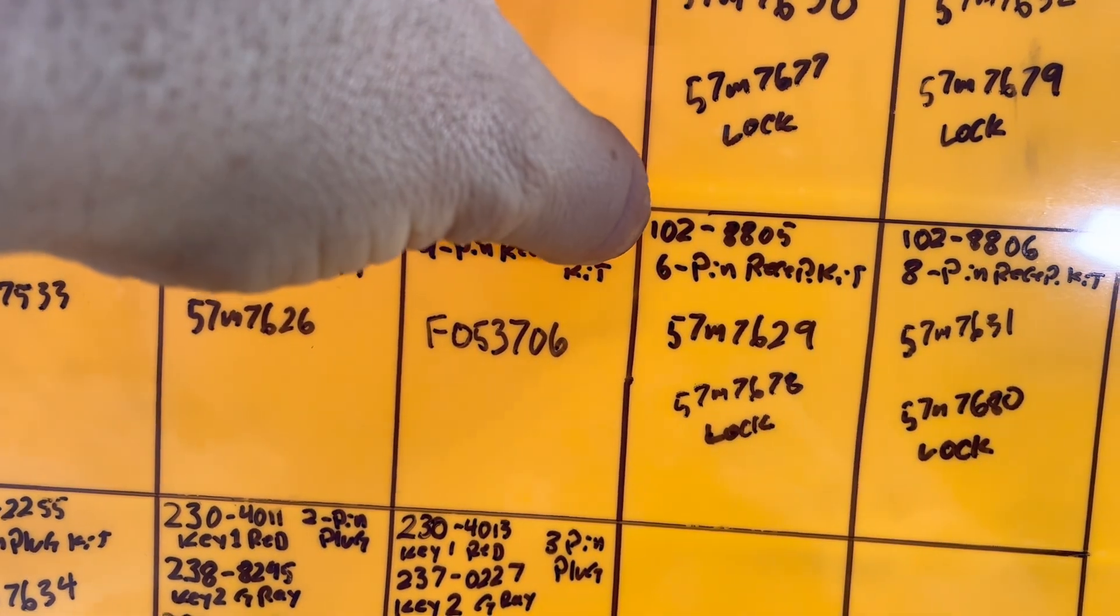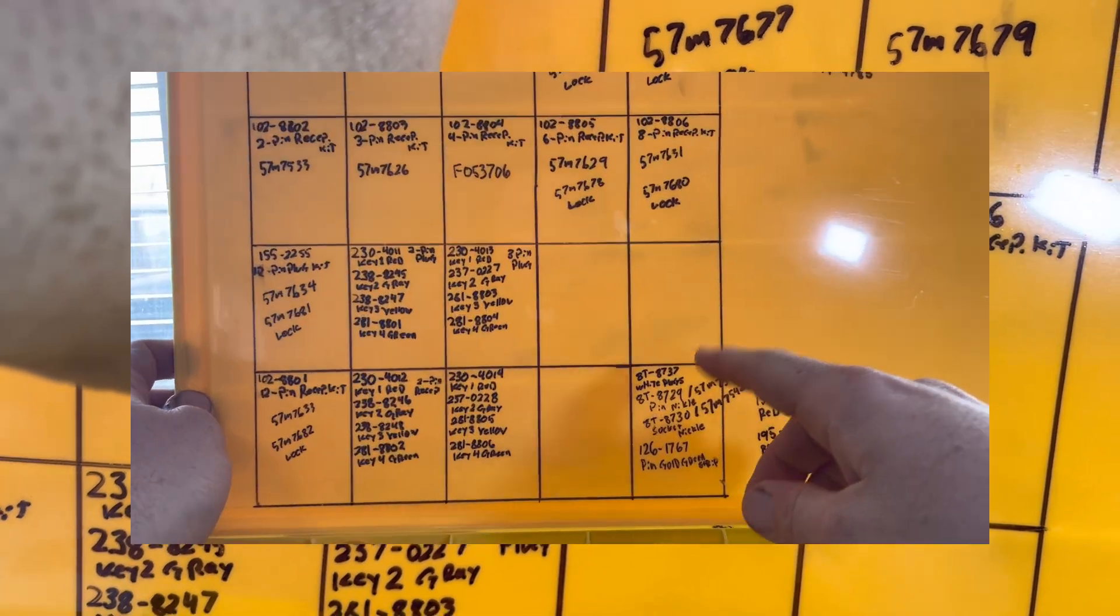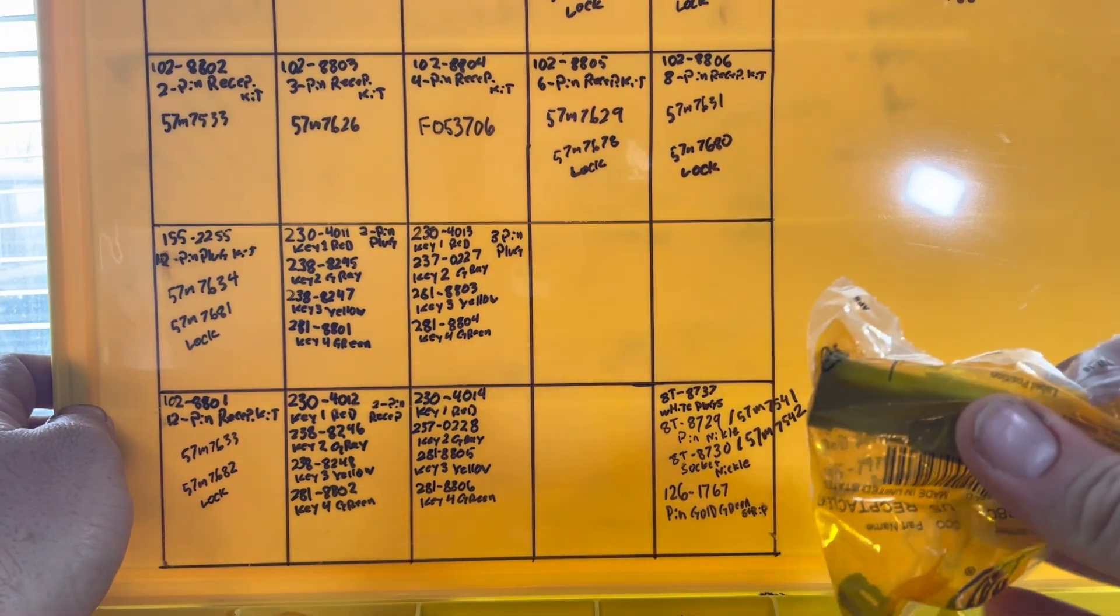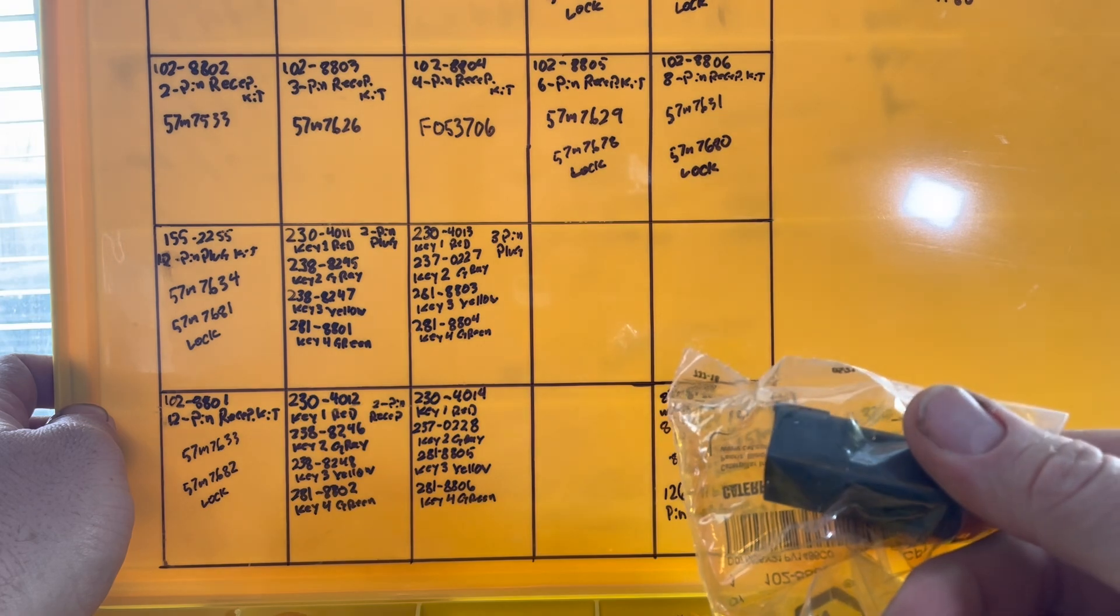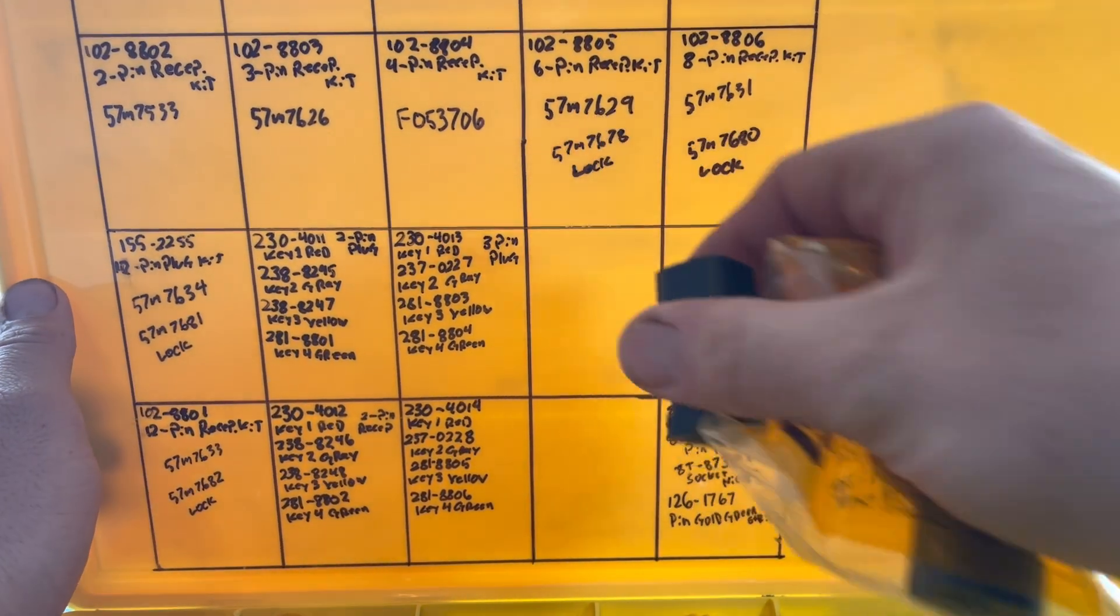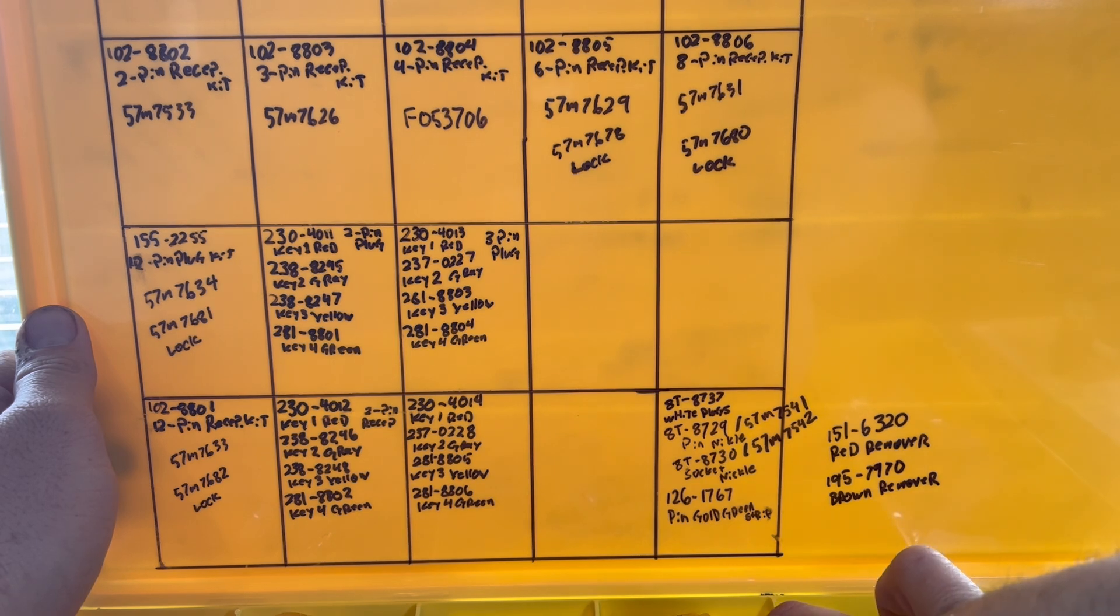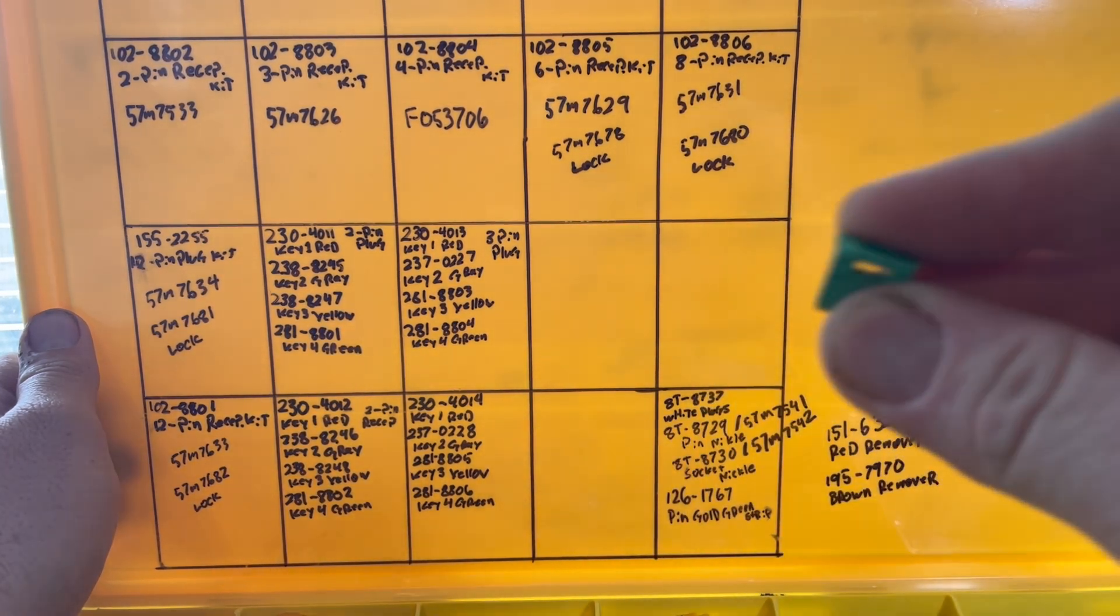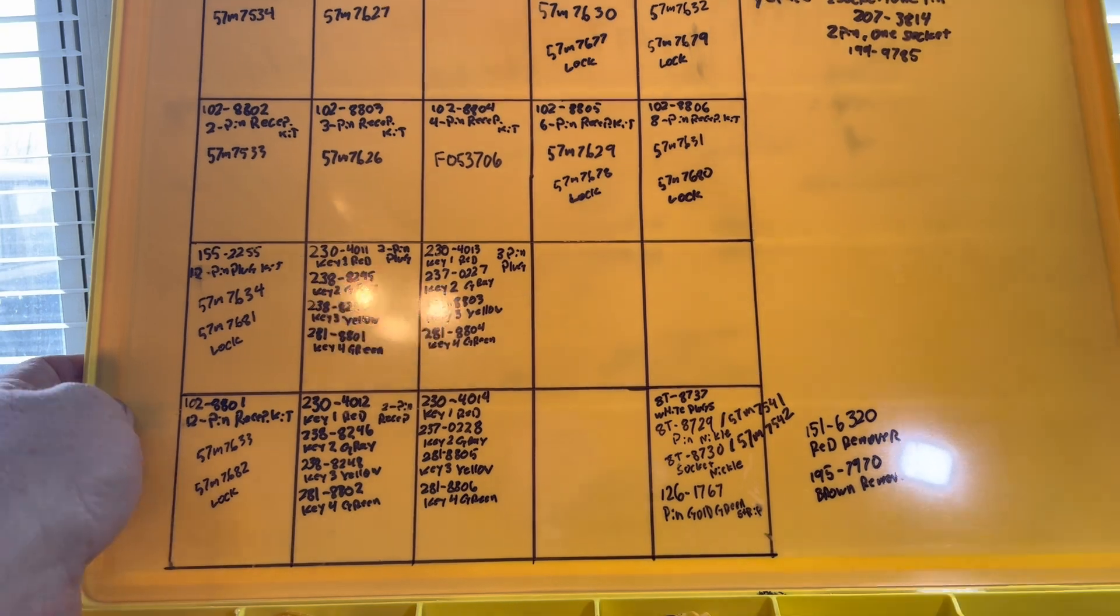So, if you look real quick here, some of them are cat part numbers, like 102-88-08-05 is a six pin receptacle. That's the cat part number. And then these are the deer part numbers. So, here's the six pin. The cat comes with a little kit. I didn't know this and I found this out the hard way. This is the 102-8805. It's a little kit. So, it has the connector and the lock. Whereas, if you get the deer part number, the 57M, it's just the connector. And then you have to get the lock separate.